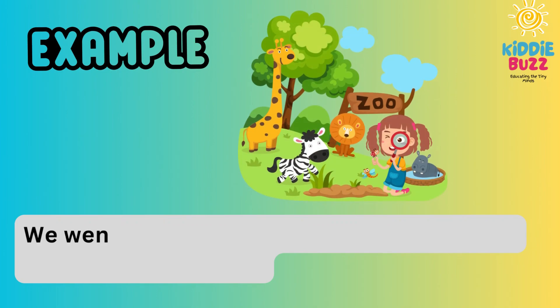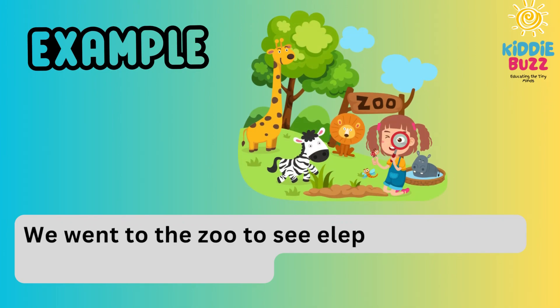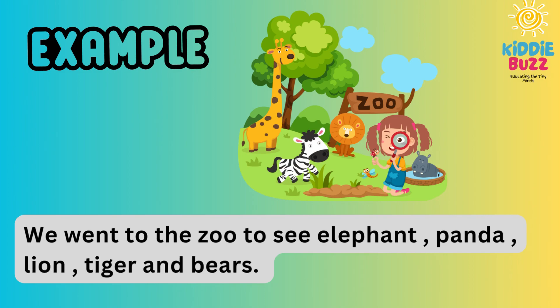We also use a comma and the conjunction AND when creating a list. For example, 'We went to the zoo to see elephant, panda, lion, tiger and bears.' Instead of listing each separately, we connect them using commas and AND between the last two words, tiger and bears.